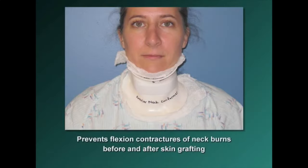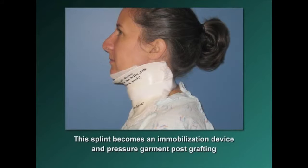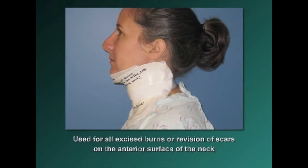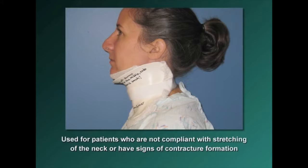This splint prevents flexion contractures of neck burns before and after skin grafting. The splint becomes an immobilization device in pressure garment post-grafting. It is used for all excised burns or revision of scars on the anterior surface of the neck. It is also used for patients who are not compliant with stretching of the neck or who have signs of contracture formation.